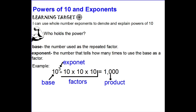If you look on your screen, you will see the definition of base and the exponent, and also an example that explains the definition. The number used as the repeated factor is going to be the base — so this 10 is used as the repeated factor 3 times in this example. The exponent is the number that tells how many times to use the base; our exponent is this tiny 3, and in this case we're going to use the base 3 times.